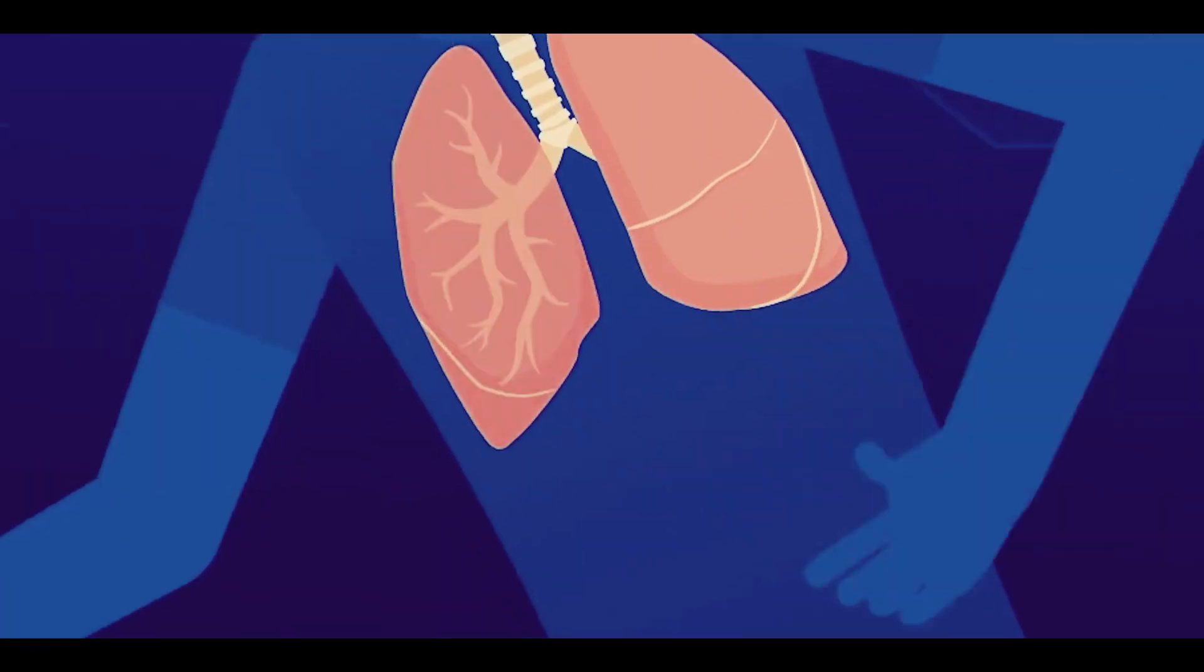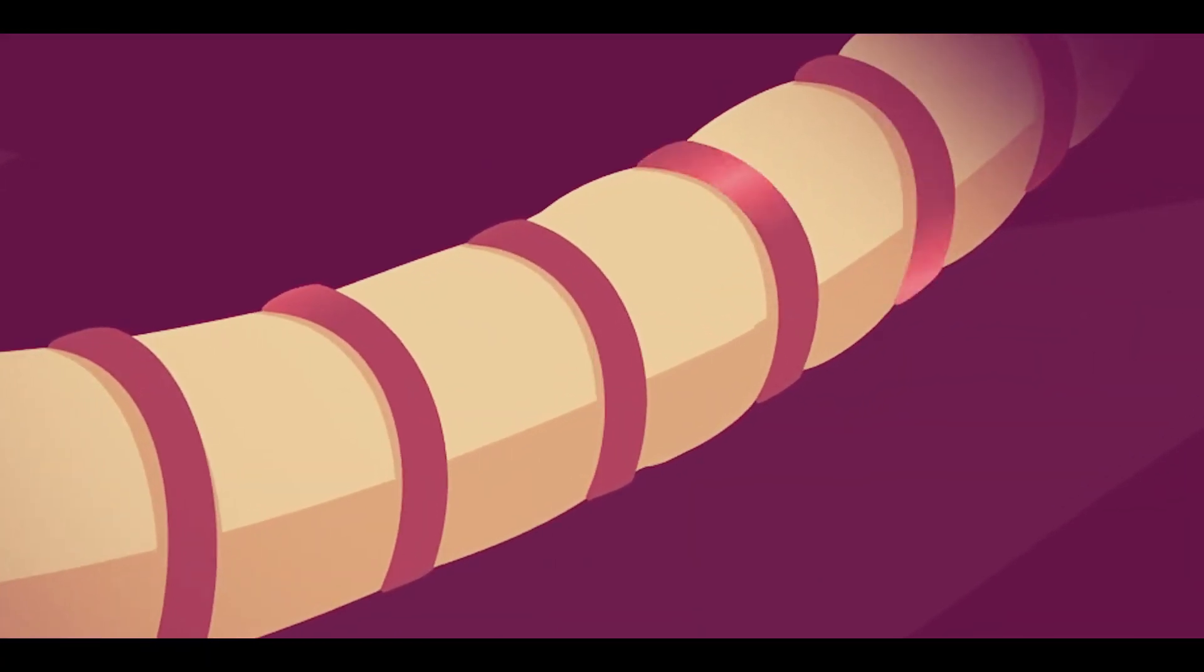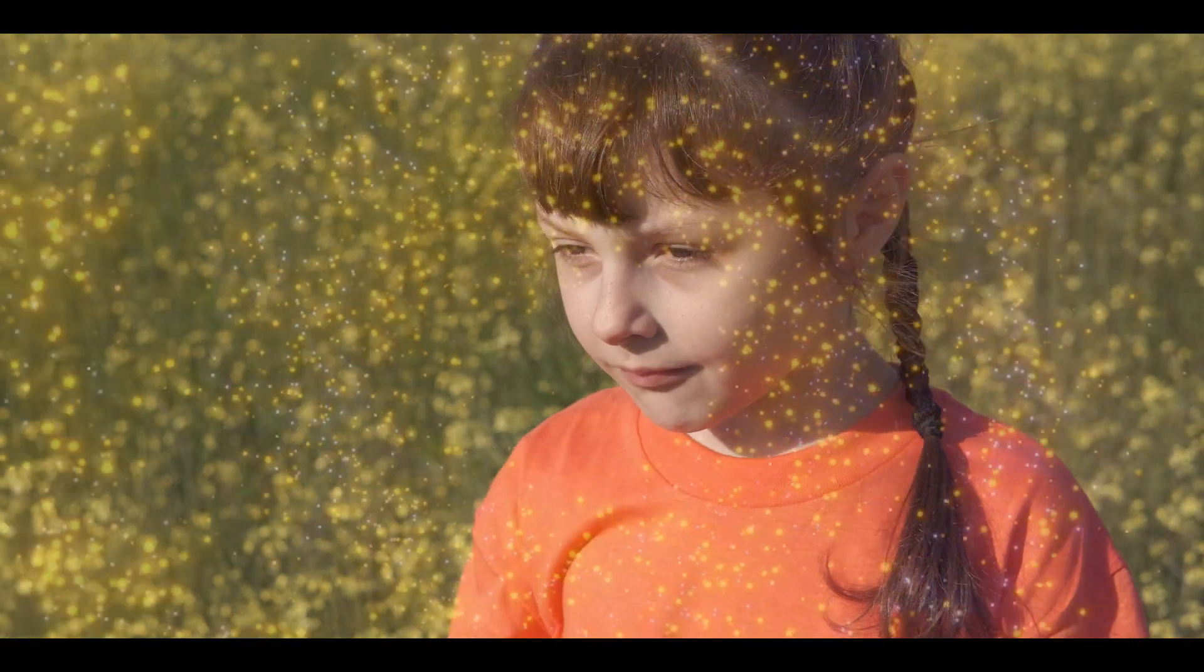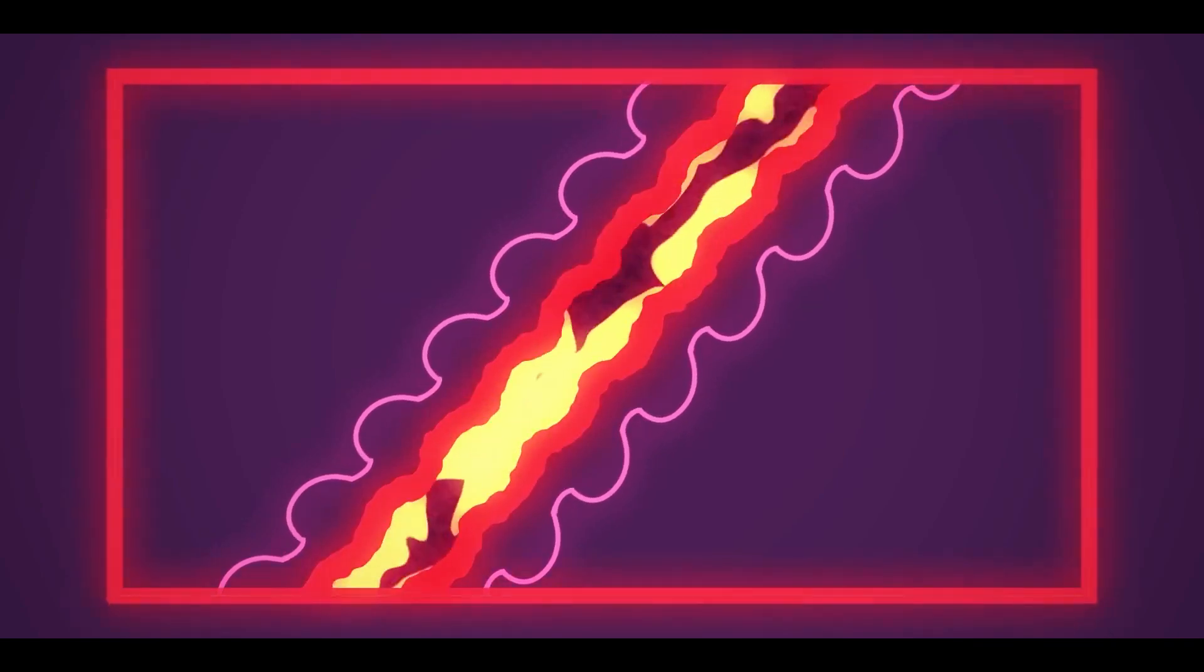Asthma is a lung disease which develops due to narrowing of airways called bronchioles in our lungs. It is a condition in which exposure to certain chemicals or pollen cause overproduction of mucus in bronchioles, leading to severe cough and difficulty breathing.